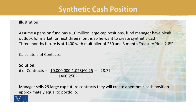Since fractional contracts aren't possible, we round it. So the manager will sell 29 large-cap futures contracts — we are taking a short position in futures. On one side we hold the shares in the portfolio; on the other side we have shorted the index. Effectively, what remains is cash — a synthetic cash position.